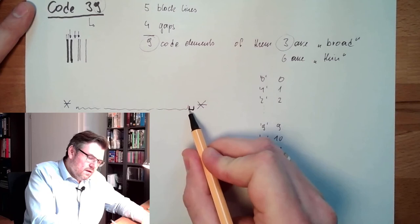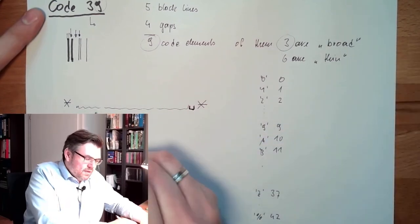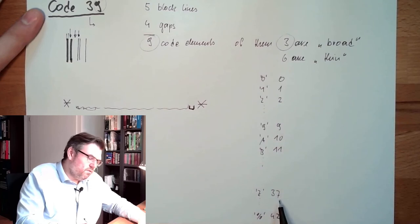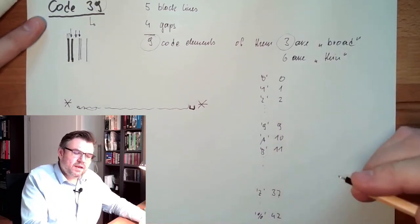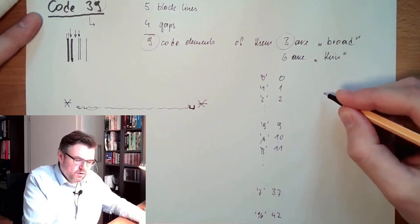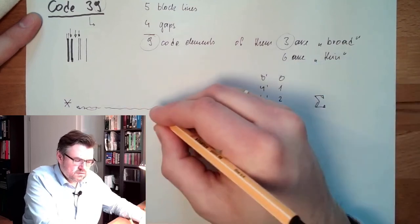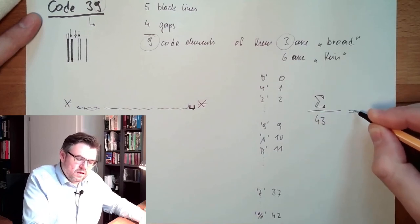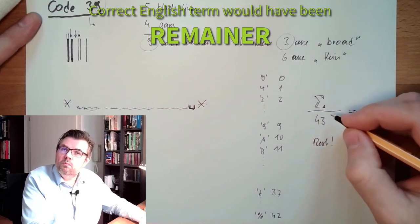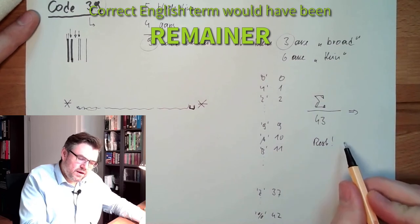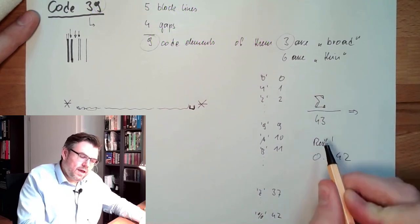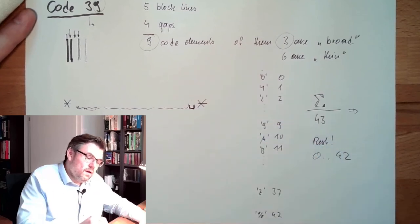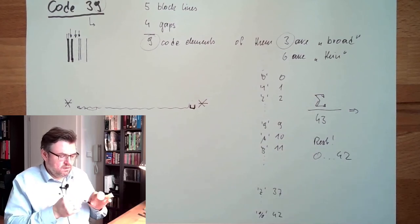Now if I want to make this parity check, there is a parity sign at the end. It will be made that way that we are summarizing all the values of all characters before. If there is a two, it's two plus nine plus thirty-seven and so on, and I get a total number. If I divide this total number by 43 - it's not only divided, interesting is the rest, the modulo operation. Then I get values between zero and 42 and I can select the corresponding sign at the end.